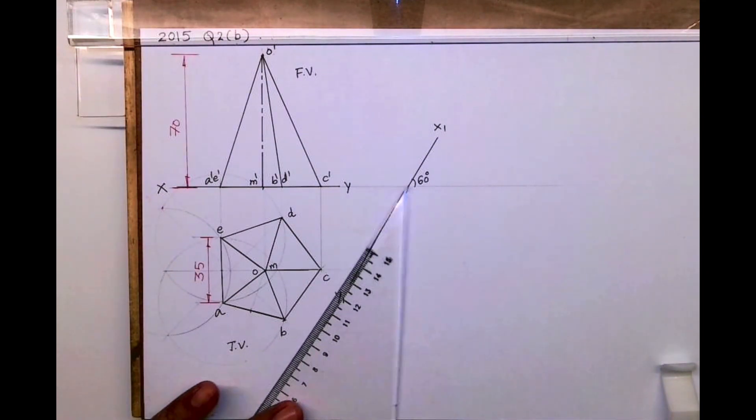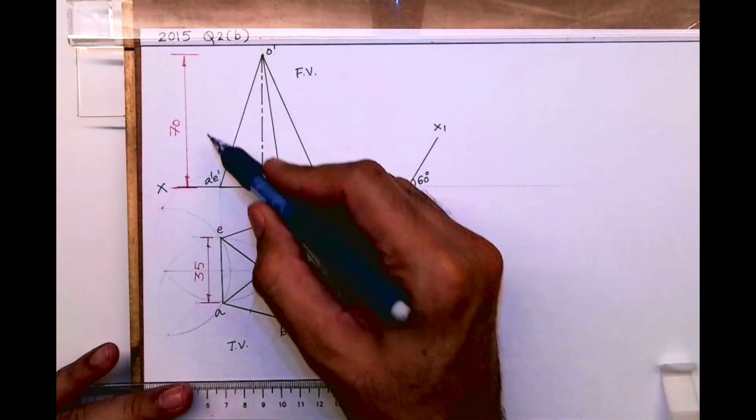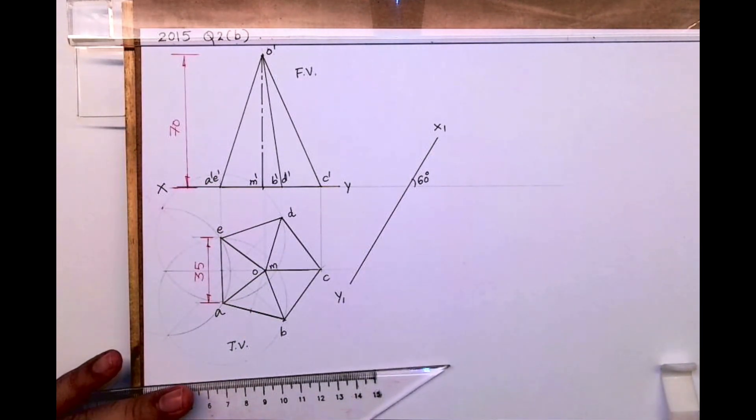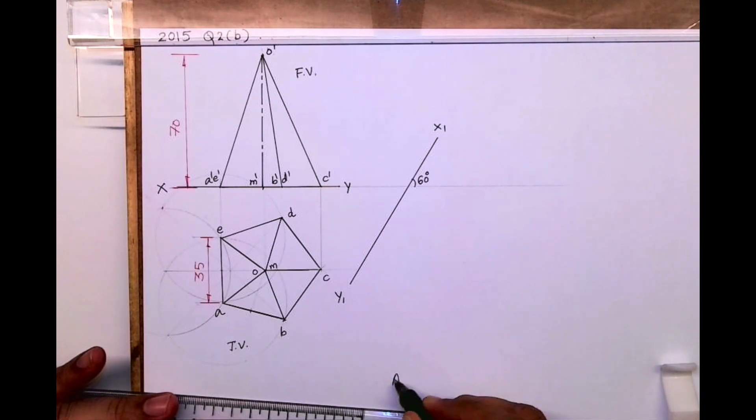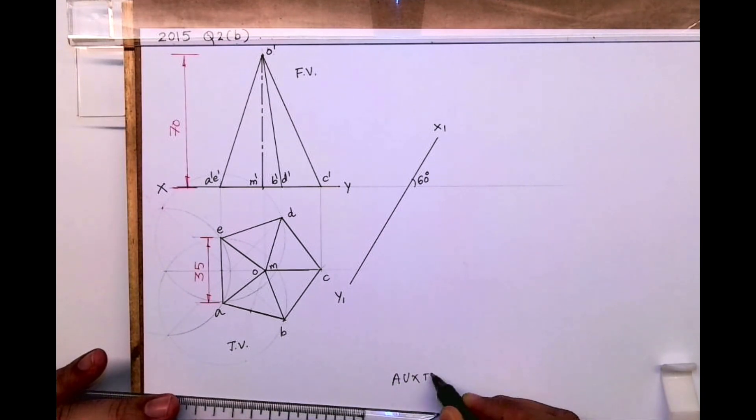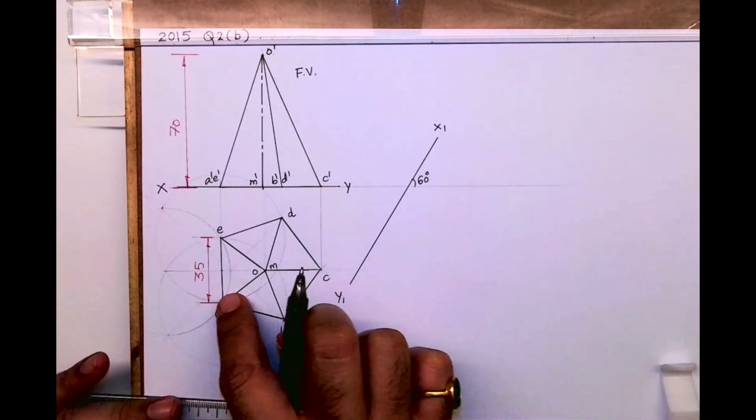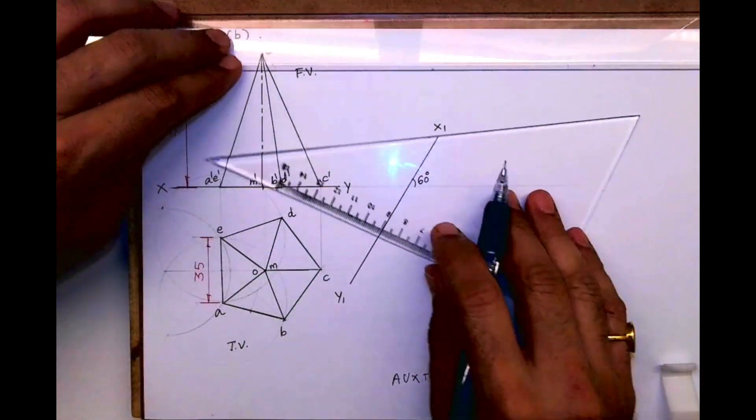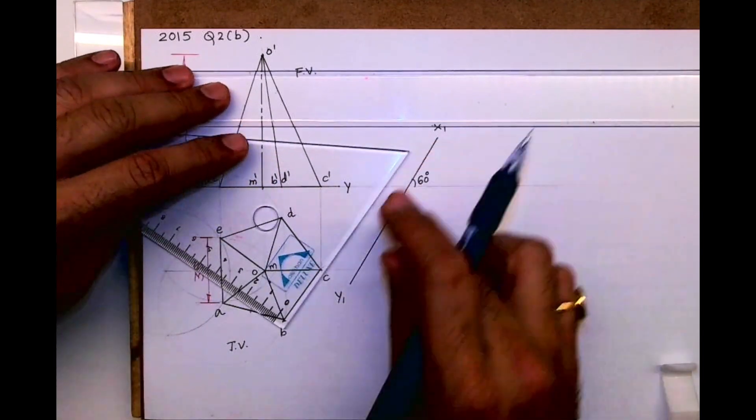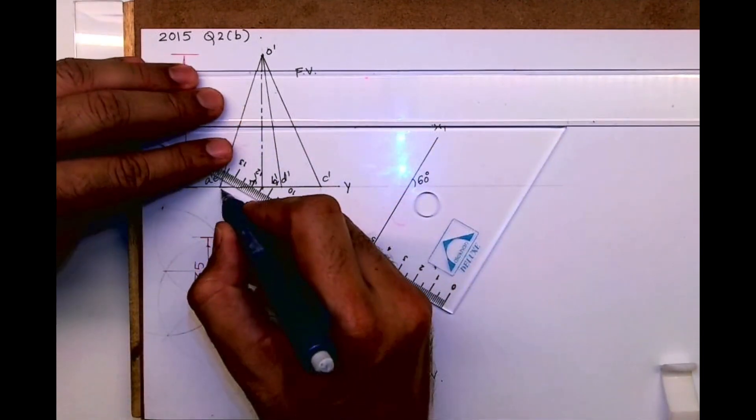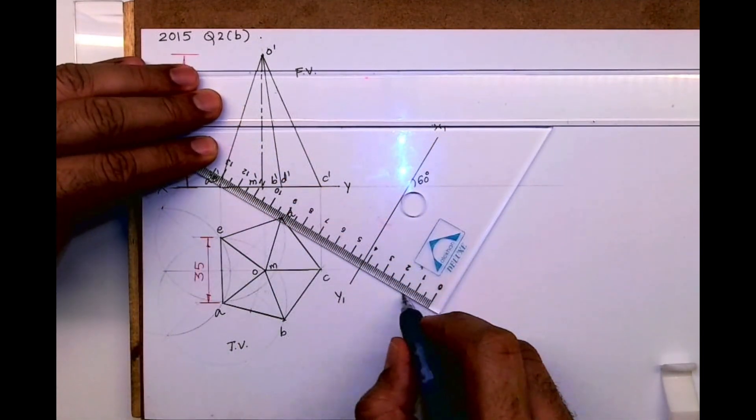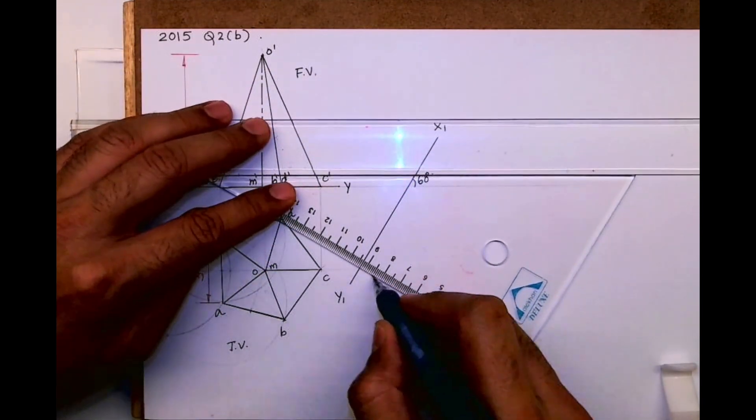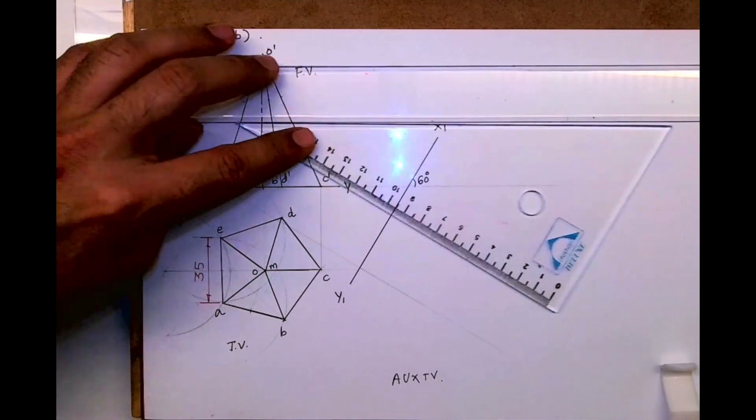The pentagon is shown in the figure. First we'll draw this, and we need to draw the auxiliary top view which will come next to the top view over here. First we will do naming, and now I will project. This is 60 degrees, so I will take it at 30 degrees. Always remember in auxiliary view it will be perpendicular - so if it is 60, we'll take 30; if it is 45, we'll take 45.